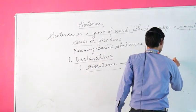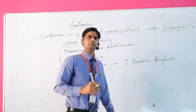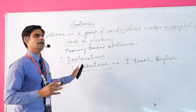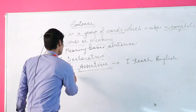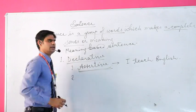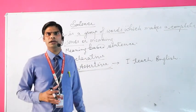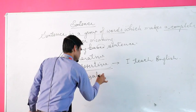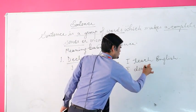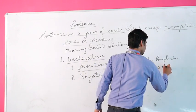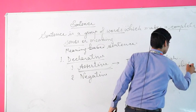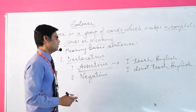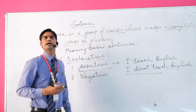For example: 'I teach English.' It is a simple sentence declaring something — an assertive sentence — so it is called an affirmative declarative sentence. The second type of declarative sentence is the negative, or denial manner. In a negative way we can say: 'I do not' or 'don't teach English.' Here we are speaking in a negative manner.